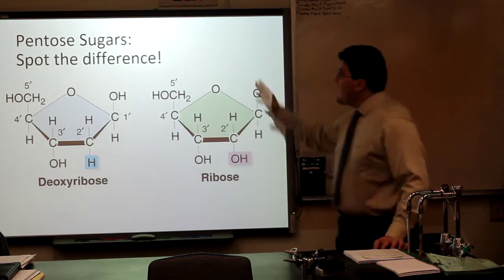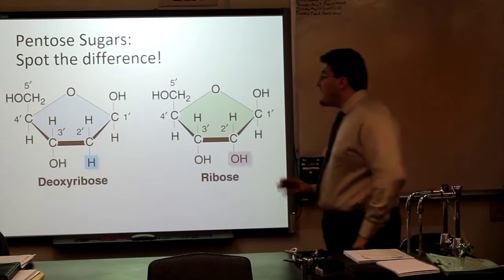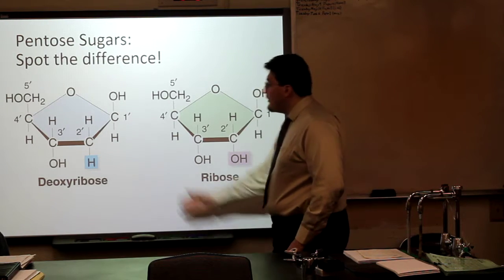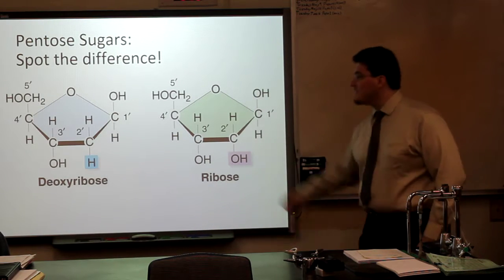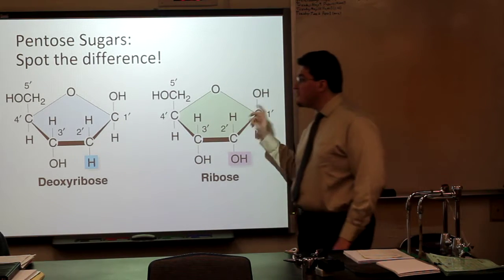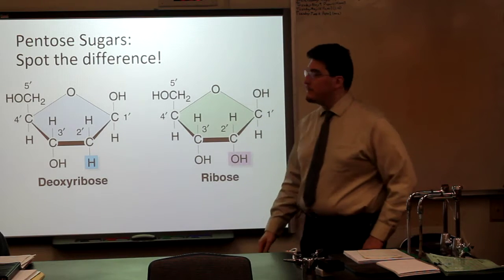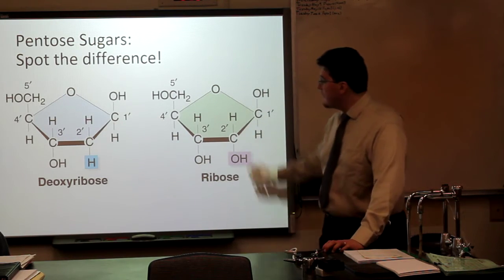Now, pentose sugars, if you can spot the difference, deoxyribose does not have an oxygen. Ribose has an oxygen here. On the two prime carbon, there is an oxygen hydrogen.